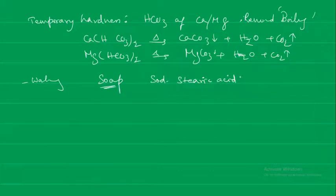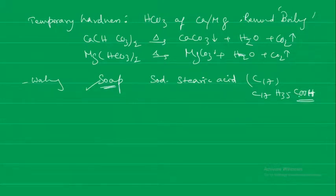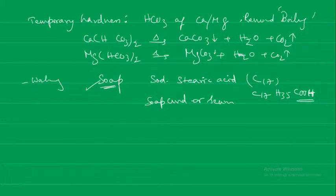Stearic acid is an organic acid. When the hydrogen in the carboxylic group is replaced with sodium, it becomes sodium stearate — that is the soap, the sodium salt of the fatty acid. If the water is hard, the calcium and magnesium salts in the water combine with the negative ions of the soap to form a slimy, insoluble precipitate — called soap curd or scum. It will not form good lather; instead it forms this soap curd or scum, which is not good for washing purposes.